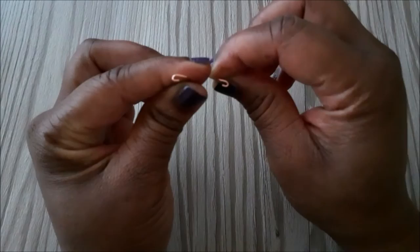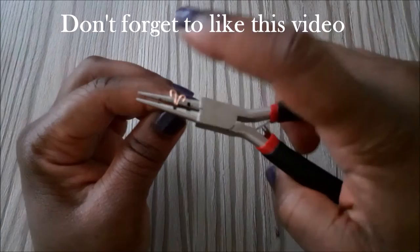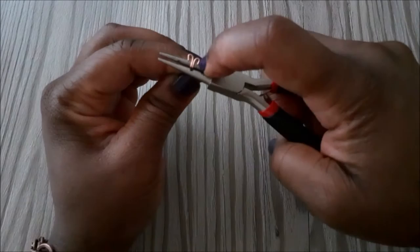Then we're going to place them together and we're going to use our round nose pliers to make a loop. So we are placing the round nose pliers under the bend and we're just going to take the tail of the wires and bring them over just like that.